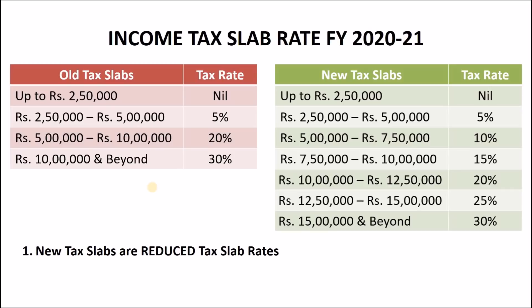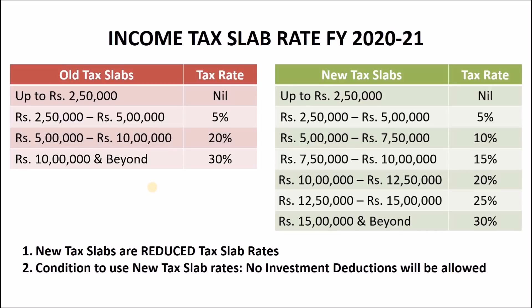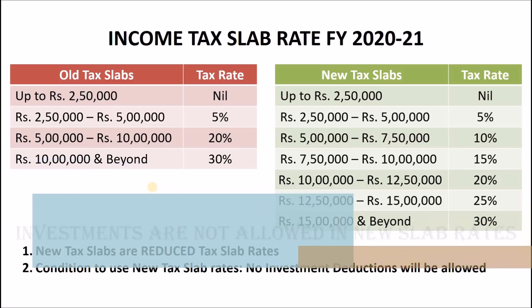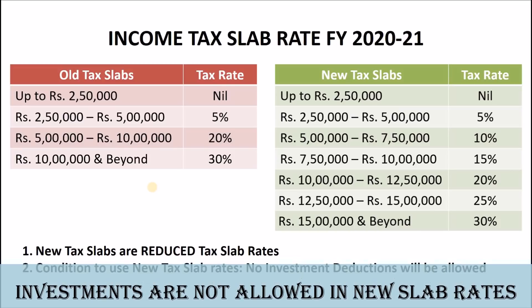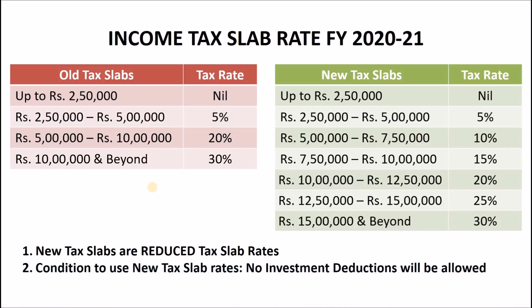You have the option of choosing which tax slab rates you want to use to calculate your income tax. But there is a condition: if you want to use the new reduced tax slab rates, you will not have the option of claiming deductions under various sections. This means you cannot claim deductions under Section 80C — which includes investments in Provident Fund, Public Provident Fund, Equity Linked Saving Schemes, Life Insurance Premiums, and other schemes — along with other sections as well. But the same deductions can be claimed if you are using the old tax slab rates, which are higher.